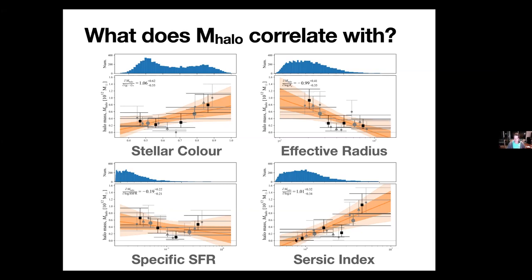Stepping back, there's nothing in the data that would say this trend is definitively more compelling than any of the others. I can't say which one is the more fundamental just from looking at this — there are a bunch of different ways to interpret the data that are consistent with it. The real point is that we are pulling out real trends, showing there is significant scatter. In generic terms, earlier-type galaxies have higher halo masses.